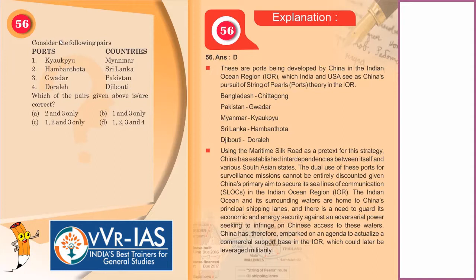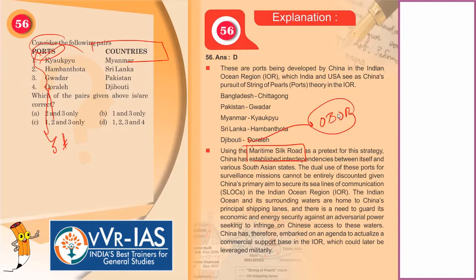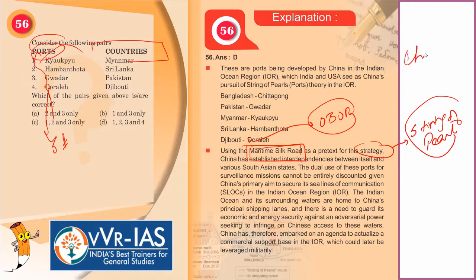The 56th question provides pairs of ports and countries — these are the String of Pearls ports. China is using the Maritime Silk Road (MSR) under OBOR (One Belt One Road initiative) as a pretext for the String of Pearls strategy, which is basically surrounding India on all sides. You should go to an atlas and look at these ports and search online for all the various ports being developed by China that are strategically important for China and threatening for India.